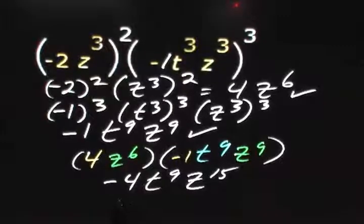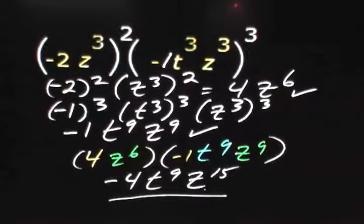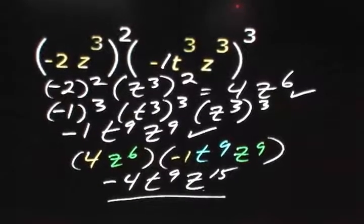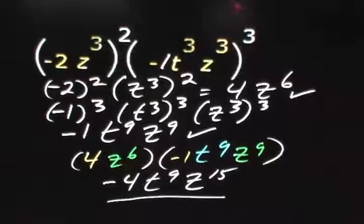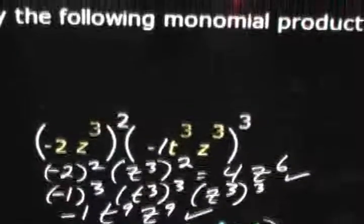So our final answer is negative 4t to the ninth, z to the fifteenth, and that is the answer we would enter in the input field.